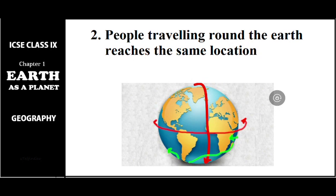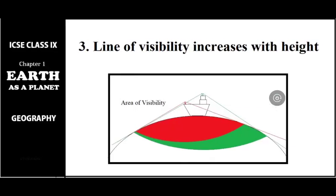The second proof is circumnavigation of the earth. In the previous session we saw that Magellan traveled around the earth and came back to the same place. People traveling around the world and reaching the same location proves that the earth is not flat — it is spherical in shape. The third proof is the line of visibility with height.